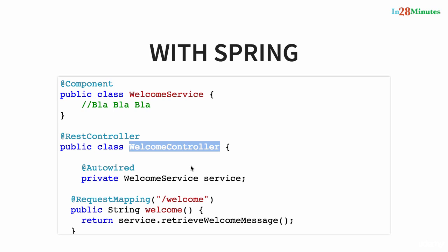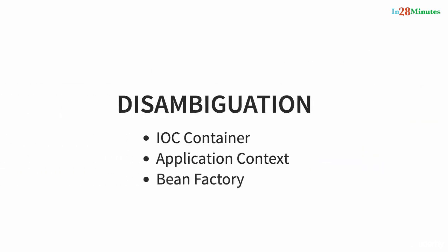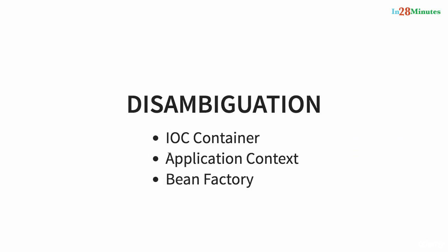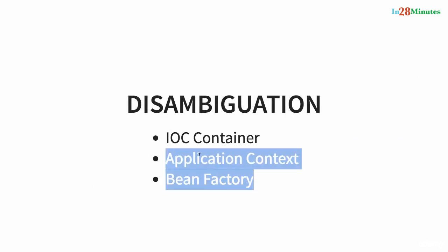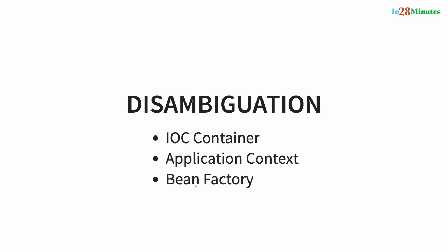The IoC container is a generic concept — it is not framework-specific. Whichever component does the wiring, creation of beans, and things like that is called an IoC container. It's a very generic concept. In Spring there are two implementations of the IoC container: one is the bean factory and the second is the application context.